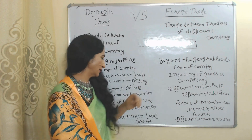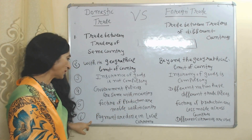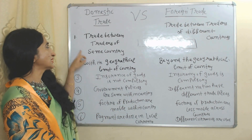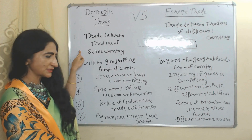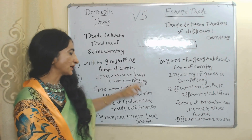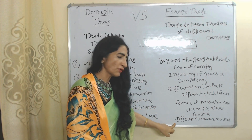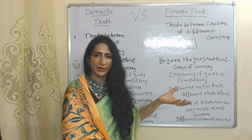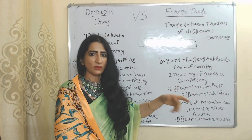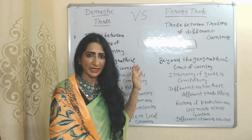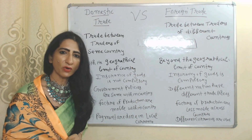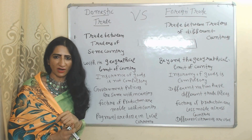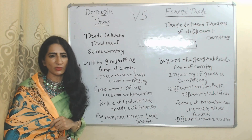Factors of production are mobile within a country in case of domestic trade — obviously, within countries, factors of production are easily movable. But in case of foreign trade, factors of production are less mobile. Payment is done in local currency in case of domestic trade, but in case of foreign trade we use different currencies in order to do trade.